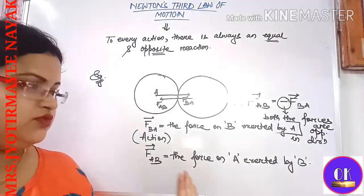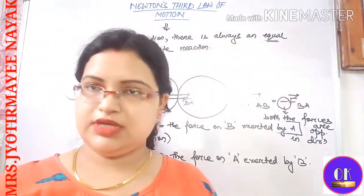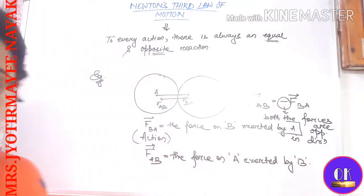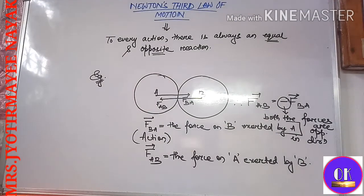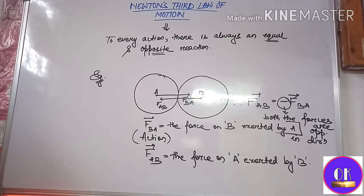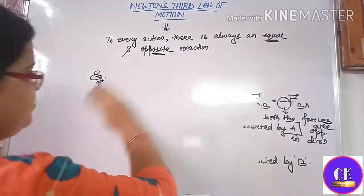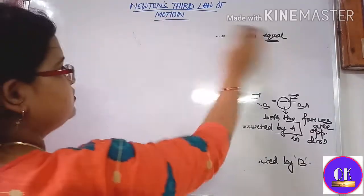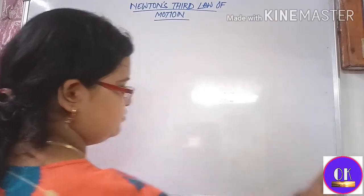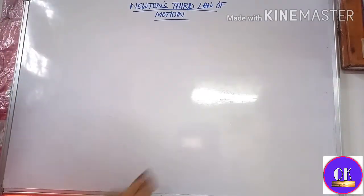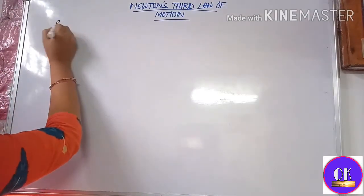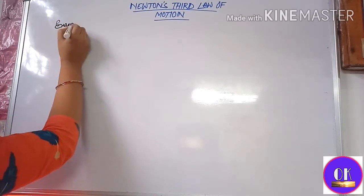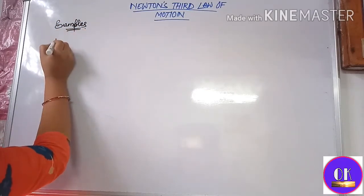So this is Newton's Third Law of Motion, which is very simple. Let us now understand some examples of it. You can take a screenshot of this. Let us understand some examples — the first example I am giving is number one.